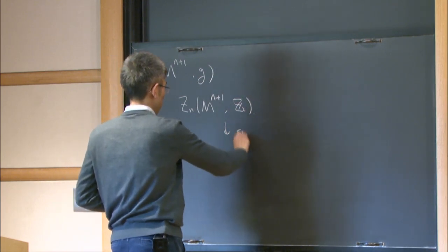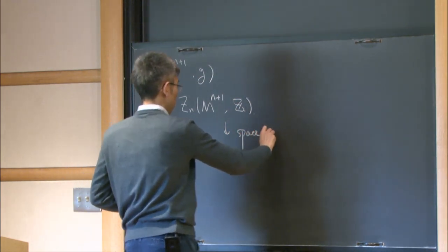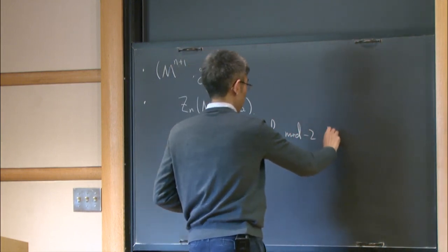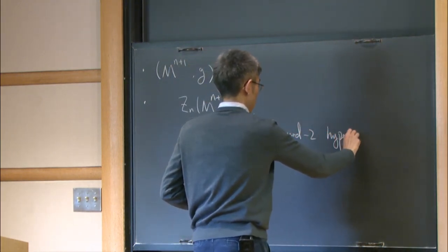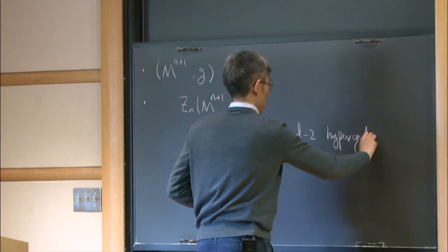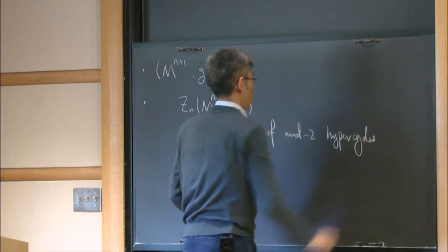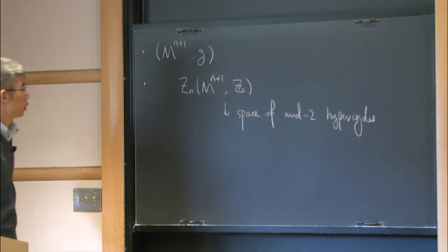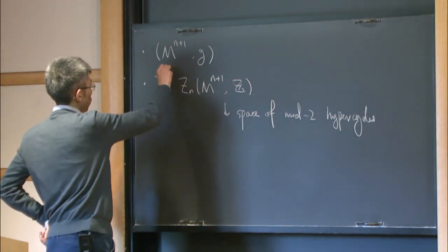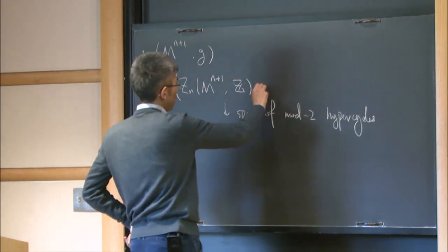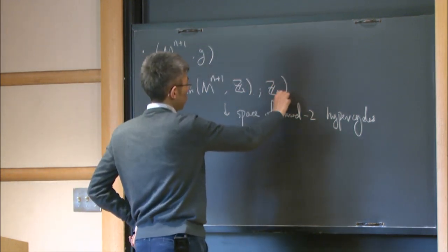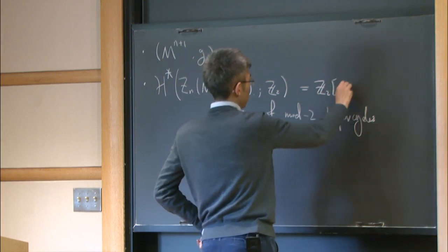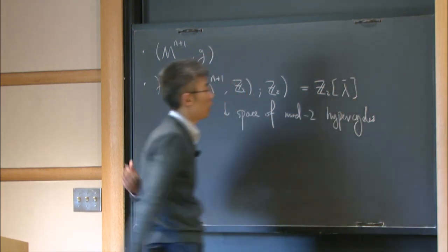This is a space of mod-2 hypercycles. It was proved, following the results of Almgren, that the cohomological ring for this space with respect to Z2 coefficients is the polynomial ring over Z2 of a single generator, lambda-bar.